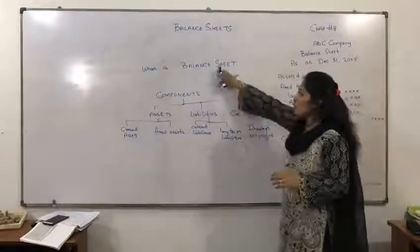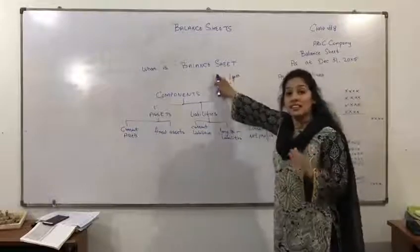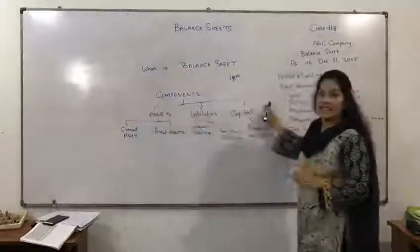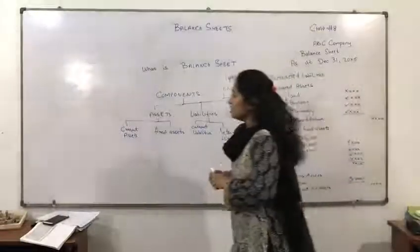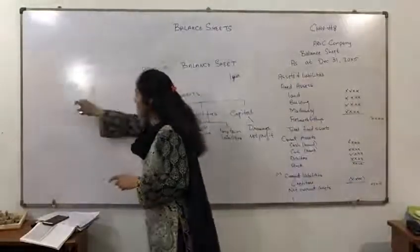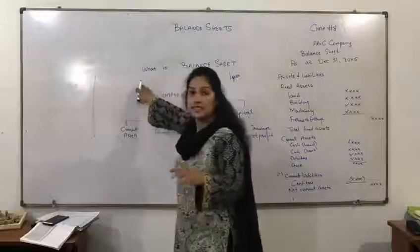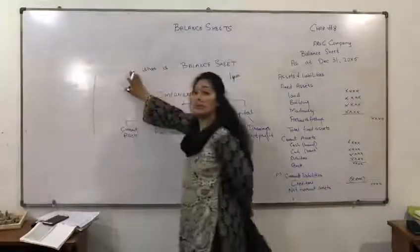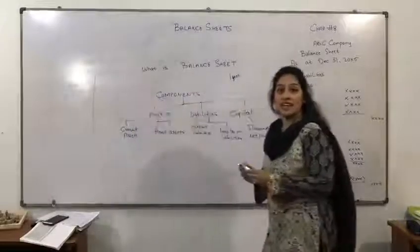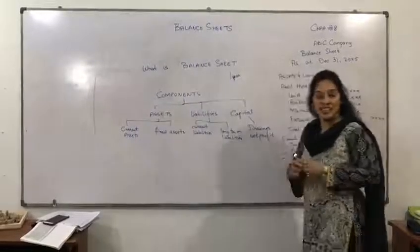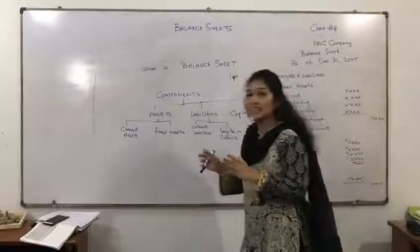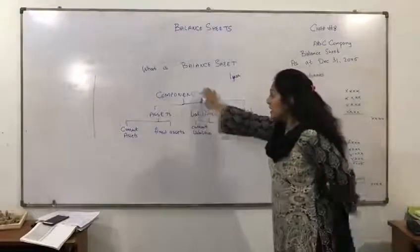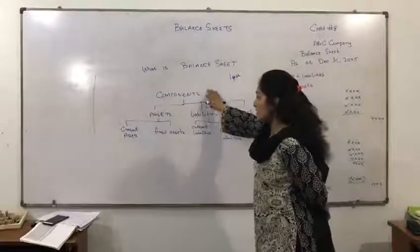Balance sheet consists of a list of assets, liabilities, and capital. Balance sheet has two parts: assets and liabilities, and the owner's equity. Both sides must be equal — it is necessary that both sides of the balance sheet must be equal. Let's consider the components of the balance sheet.